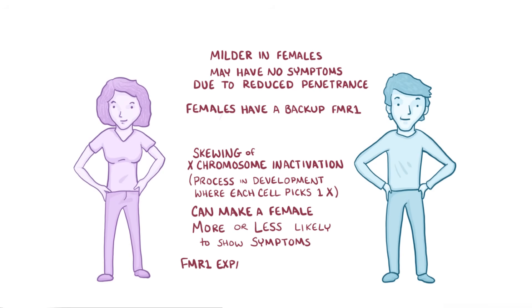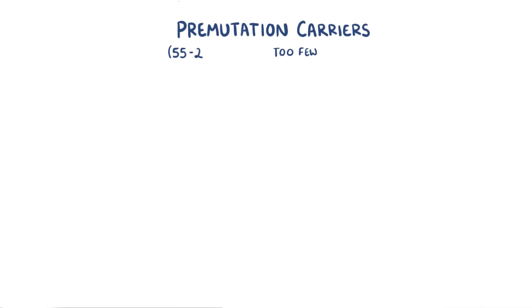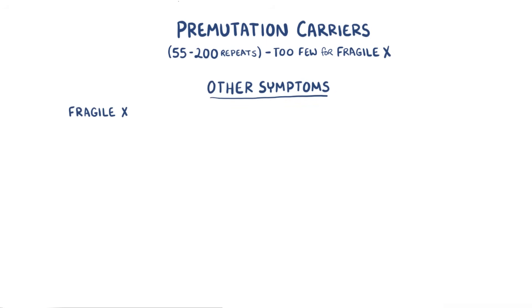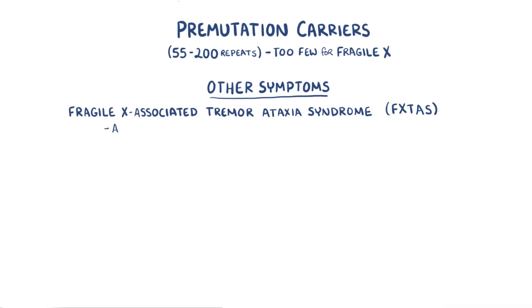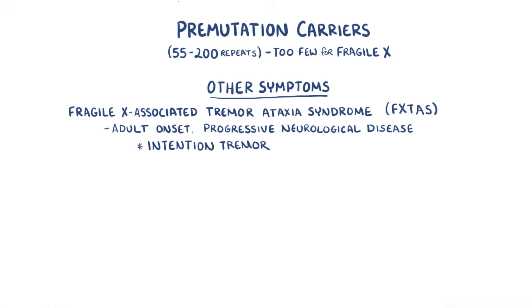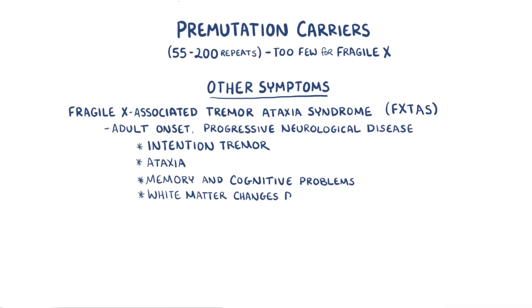Interestingly, FMR1 expansions are almost always inherited from the mother. Pre-mutation carriers have too few repeats to get Fragile X, but they can have other symptoms. For example, Fragile X-Associated Tremor Ataxia Syndrome, or FXTAS. FXTAS is an adult-onset, progressive neurological disease that includes intention tremor, which is a shaking when movement is initiated, ataxia which can make walking difficult, memory and cognitive problems, and white matter changes detected by brain MRI.